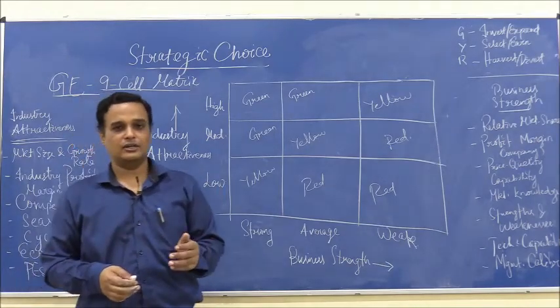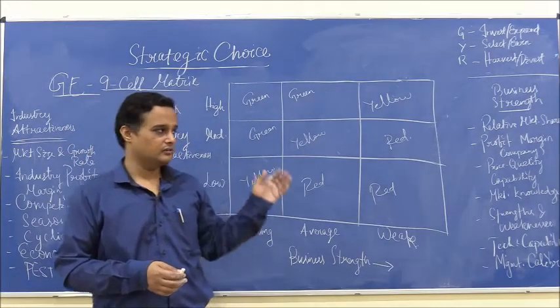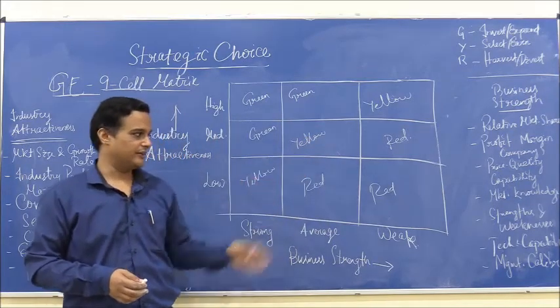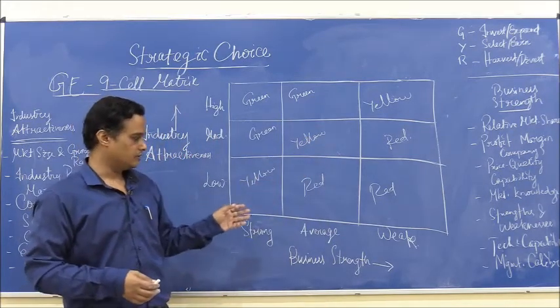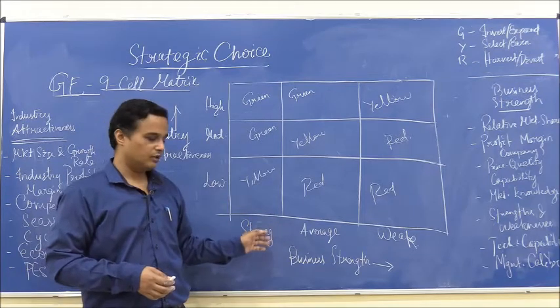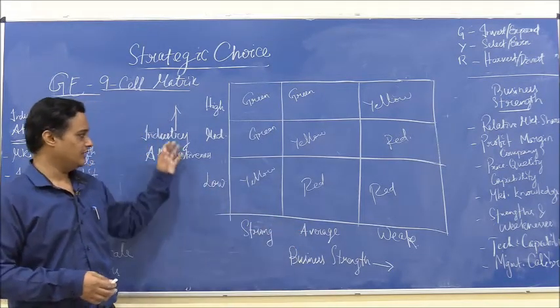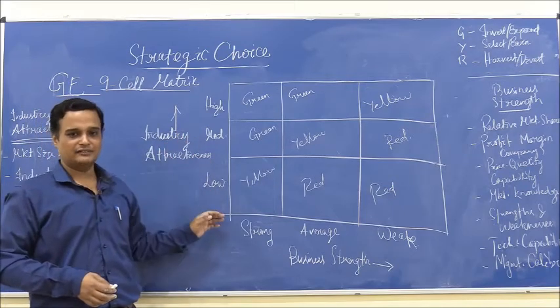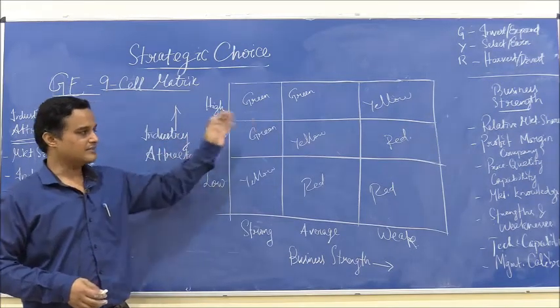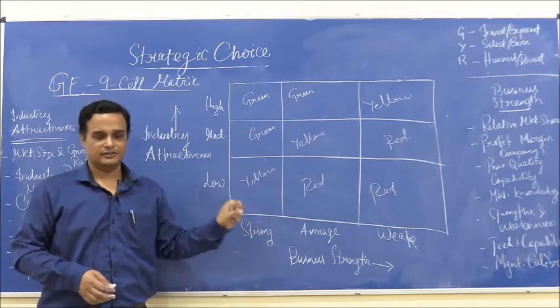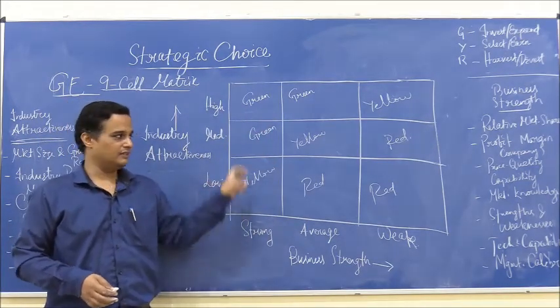This analysis is also called a traffic signal analysis based on the color patterns used in this 3 by 3 matrix. Depending on whether a business is strong, average, or weak, and depending on whether the industry is highly attractive, medium attractive, or low attractive, strategies can be devised based on the location of the particular SBU in these cells.